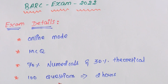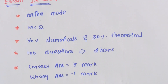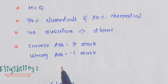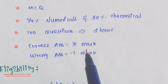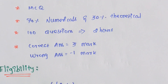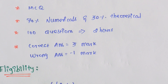Overall, there are 100 questions and it is a 2-hour test. For each correct answer, you get 3 marks. For a wrong answer, you get negative marks — 1 mark deducted. So: online mode, MCQ, 100 questions, 2 hours, plus 3 marks for right answers, minus 1 mark for wrong answers.